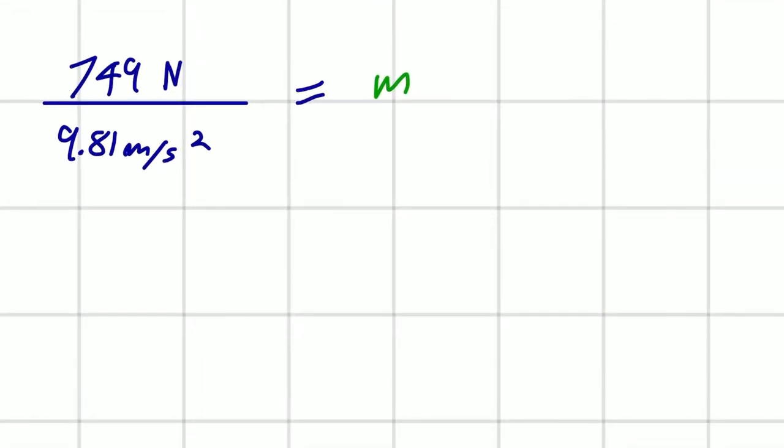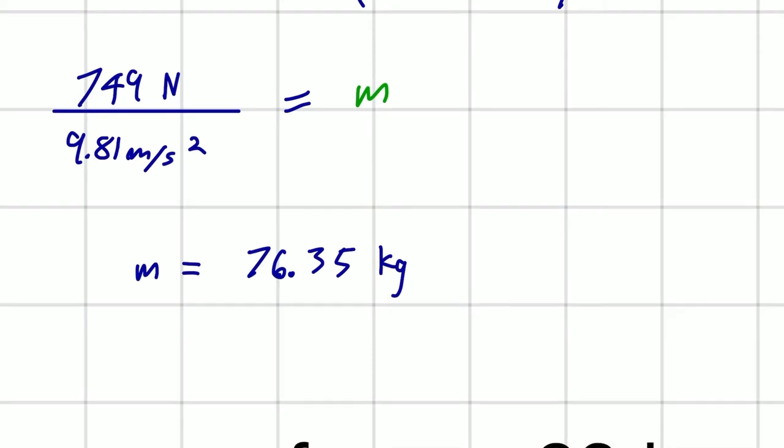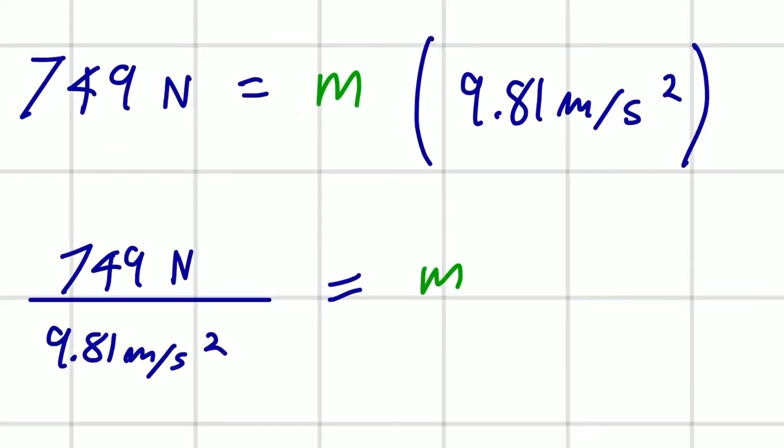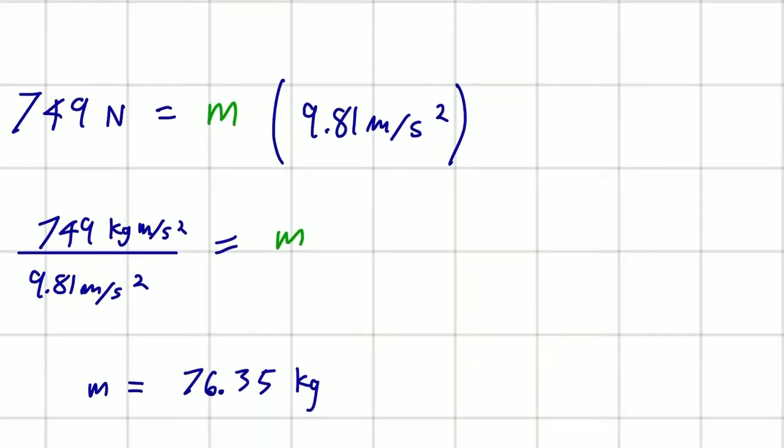And now, plugging this into our calculator, we can calculate M to be 76.35 kilograms. This newtons here, when we bring it down, I'm going to change the units back to its base units. And that's kilogram meters per second squared. This value and this value are the exact same. Because the units, although we've written them out differently, they are equivalent.